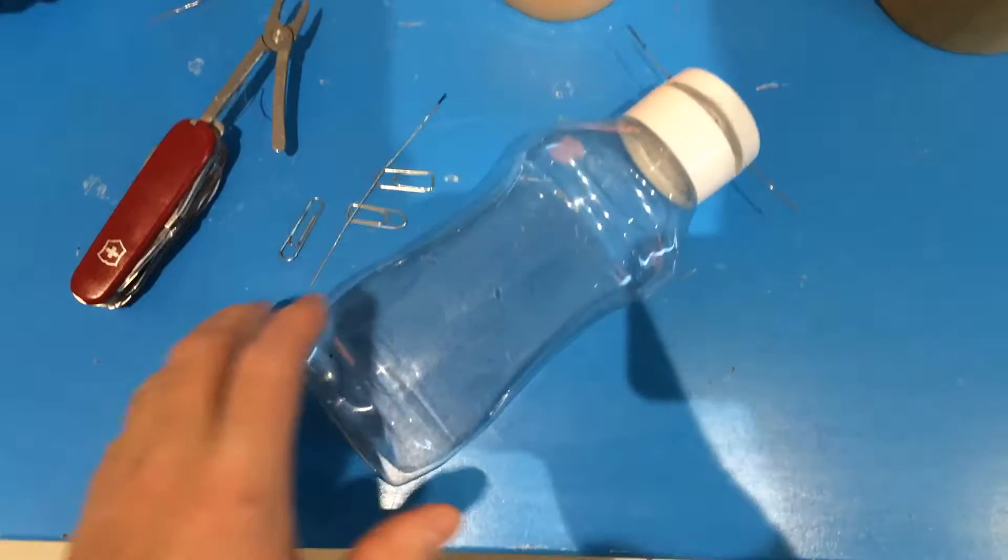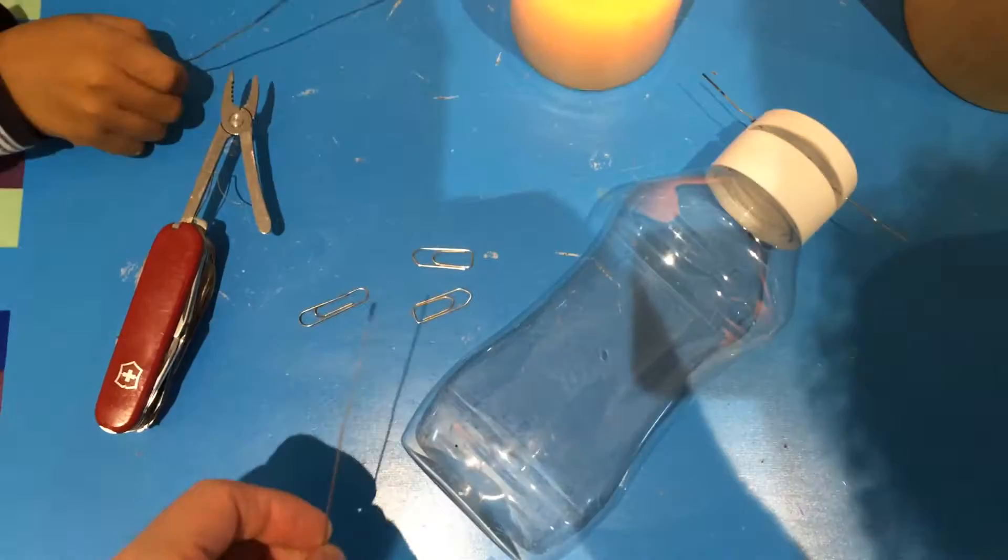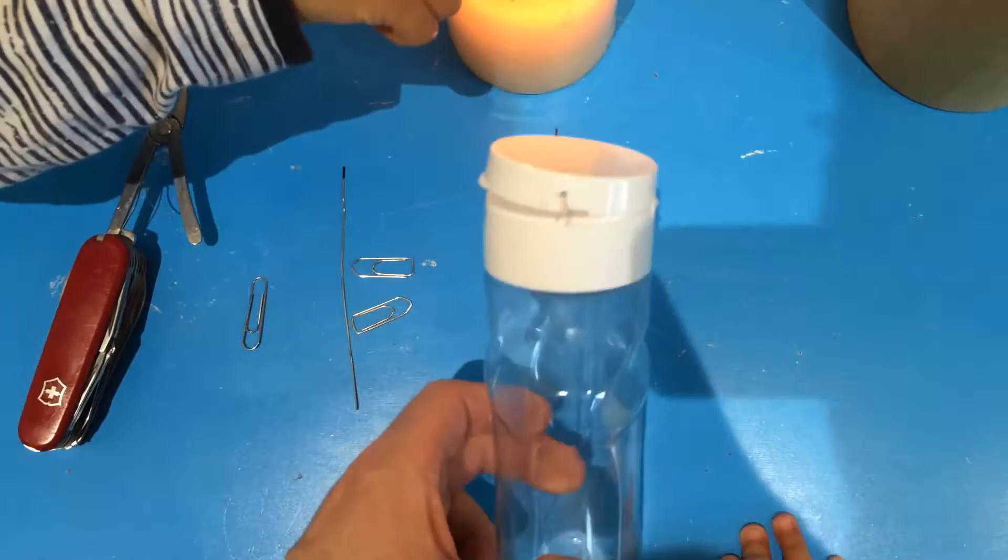So in the next step, we are taking a few little wires. So what we take is just paper clips that we've made straight. And then in the next steps, we need the paper clips.